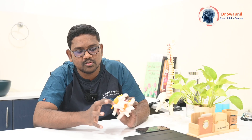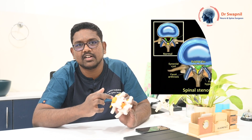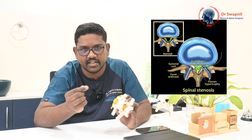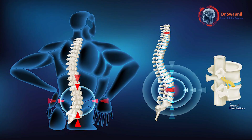Before understanding lumbar canal stenosis, we need to understand the normal spine anatomy. When you look at the normal spine, this is the spinal cord and these are the bones surrounding it. Generally, the spinal cord passes through a normal tunnel, but as age progresses, the surrounding ligaments get hardened and thickened. Also, the disc starts getting ruptured or bulging, and because of this, the tunnel through which the spinal cord passes becomes narrow.